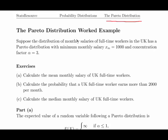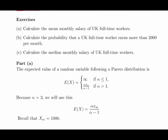Suppose the distribution of monthly salaries of full-time workers in the UK has a Pareto distribution with a minimum monthly salary XM equals 1,000 and a concentration factor alpha equals 3. We need to: calculate the mean monthly salary, calculate the probability that a UK full-time worker earns more than 2,000 per month, and calculate the median monthly salary.